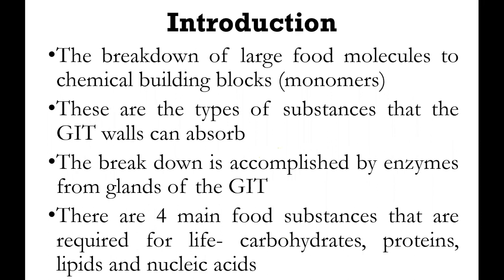There are four main food substances required for life: carbohydrates, proteins, lipids, and nucleic acids. We need to be digesting and absorbing these. There are certain food substances that we don't have the enzymes to digest, like cellulose. Even if you eat plants, it is very difficult to digest some of those things coming from plants.